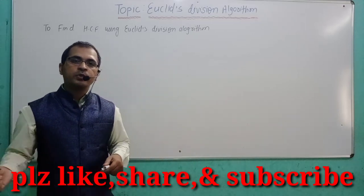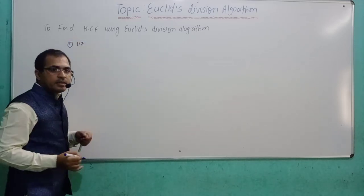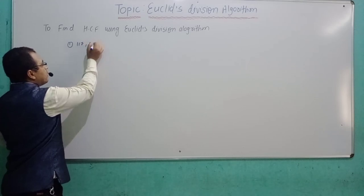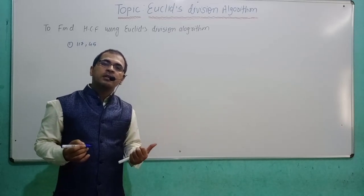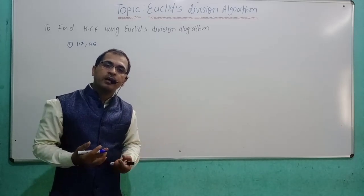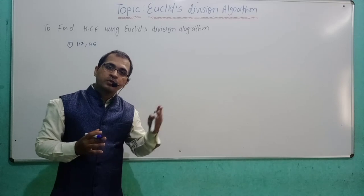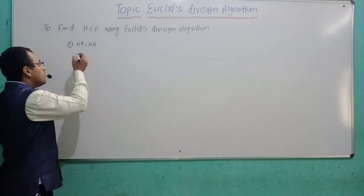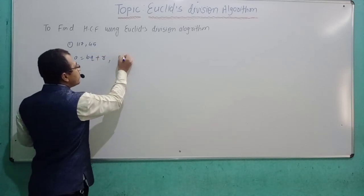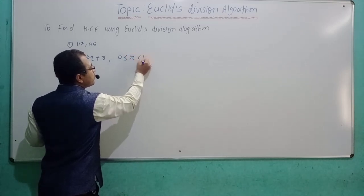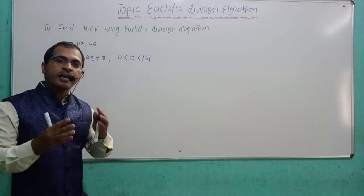Suppose we have two integers: 117 and 45. First of all, you will have to write all these things on the basis of Euclid Division Lemma. For that, you will have to choose the bigger value and the smaller value. According to Euclid Division Algorithm, A is equal to BQ plus R, where 0 ≤ R < B. Here you will have to select A and B.